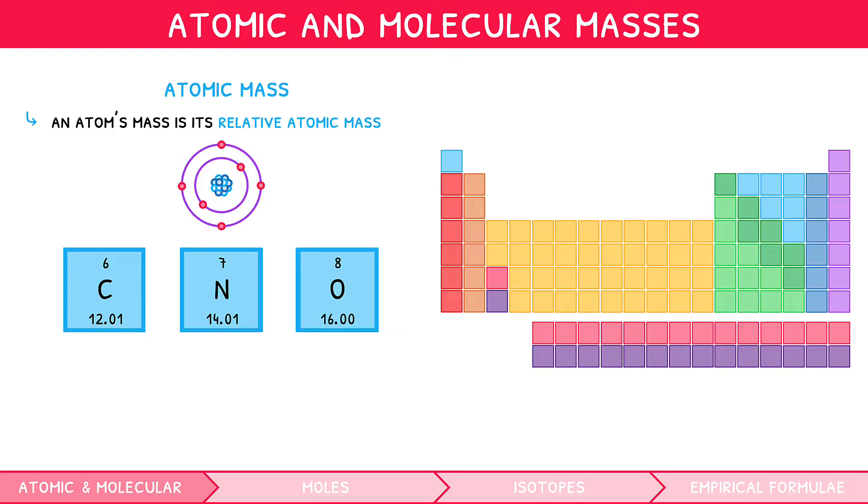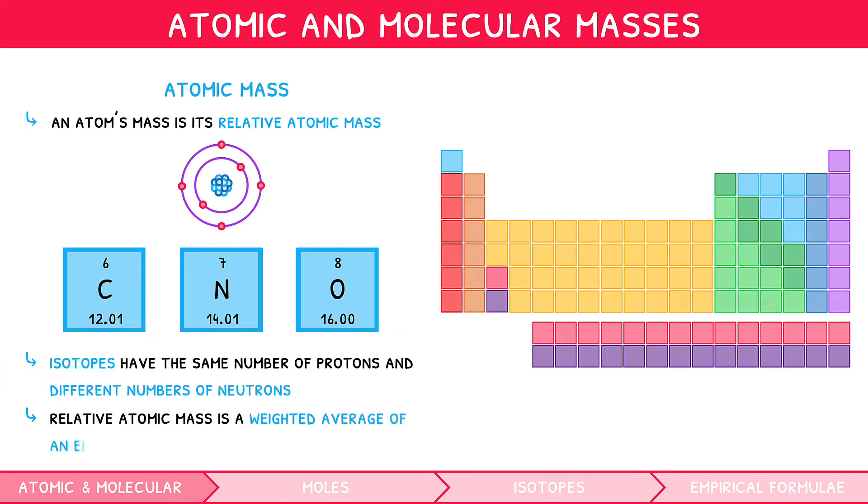However, elements do not exist in just one form, but as various isotopes. These versions have the same number of protons, but slightly different number of neutrons. Therefore, the relative atomic mass of an element is a weighted average of all of these isotopes, hence why most of them are not whole numbers on the periodic table.